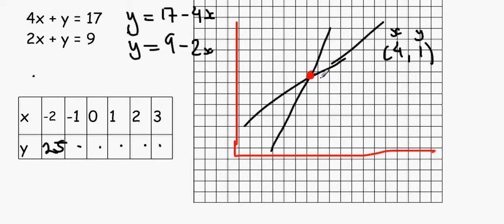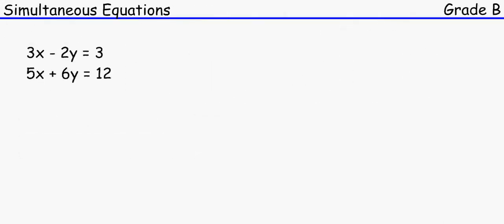That's the easiest method, though I suggest you practise it. Now let's do another example. We have 3x minus 2y equals 3 and 5x plus 6y equals 12.